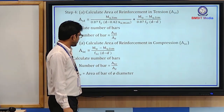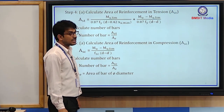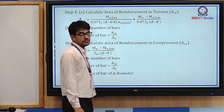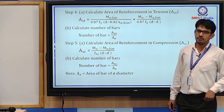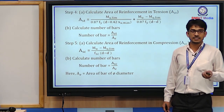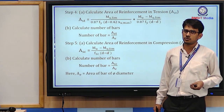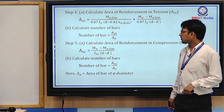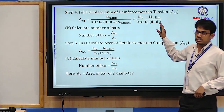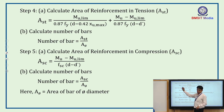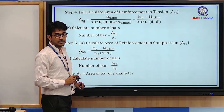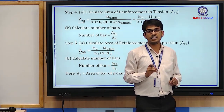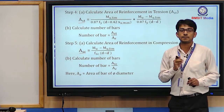After calculating fsc in Step 3, we move to Step 4: calculate the reinforcement area in the tension zone (Ast), then determine the number of bars. Step 5: calculate the reinforcement area in the compression zone (Asc), and determine the number of bars. The abbreviation Ast is the area of steel in the tension zone, and Asc is the area of steel in the compression zone.